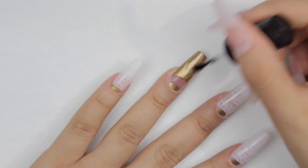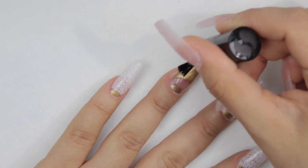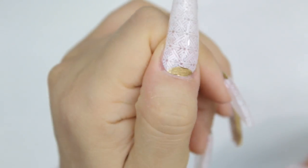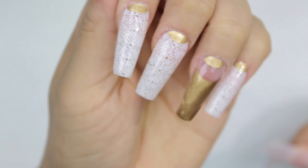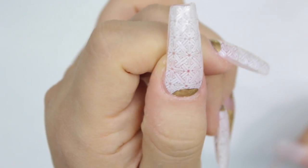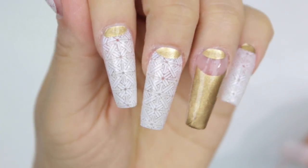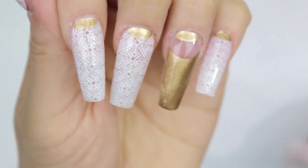I added the Seche Vite top coat and it's like if I had polished this design myself. I really enjoyed it and I plan on using them one day if I'm ever in a hurry. This is the end result already with top coat, and now I'm gonna show you how to remove it.